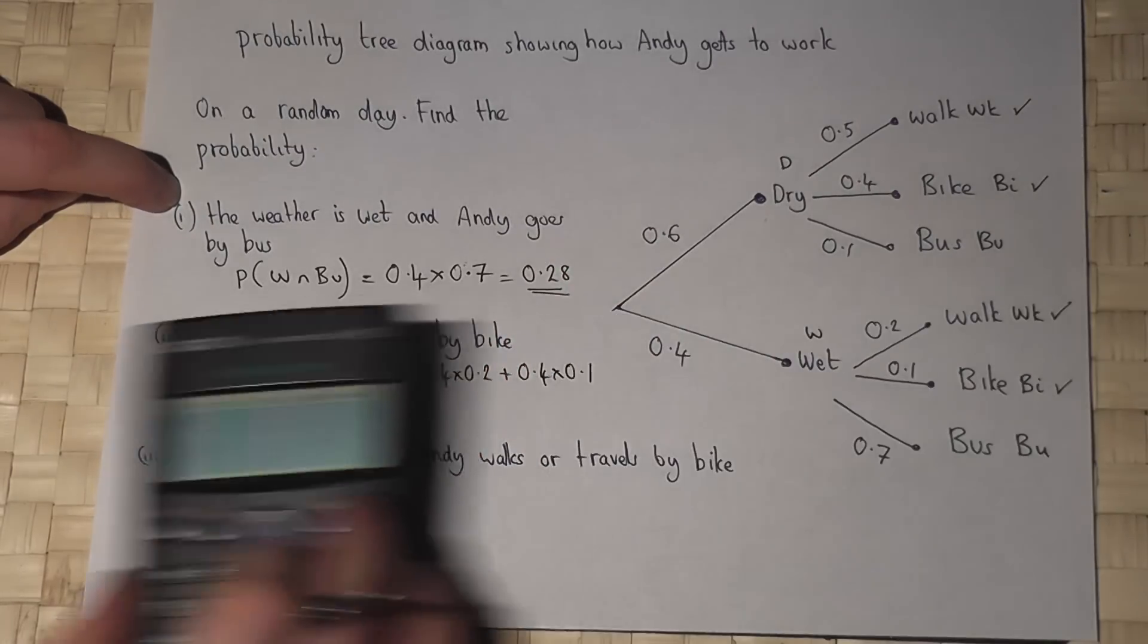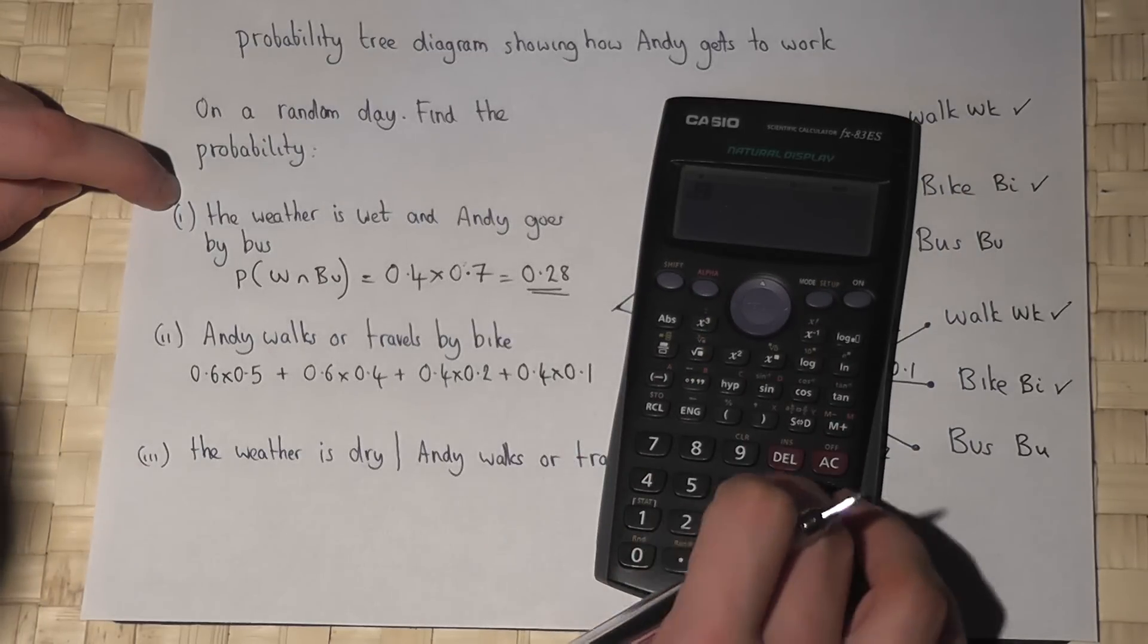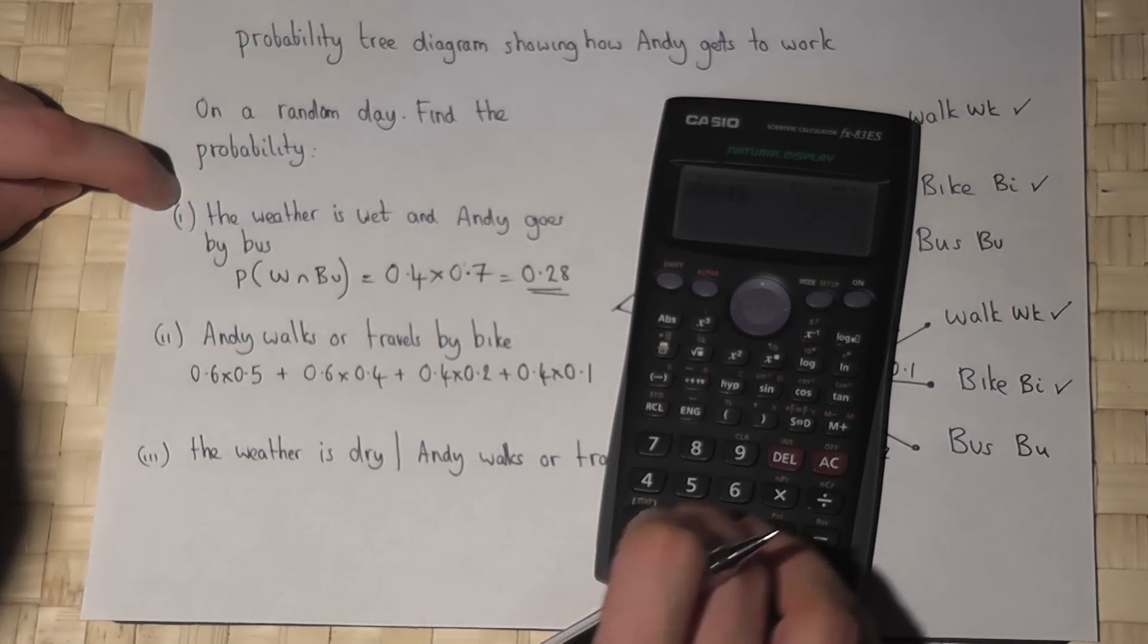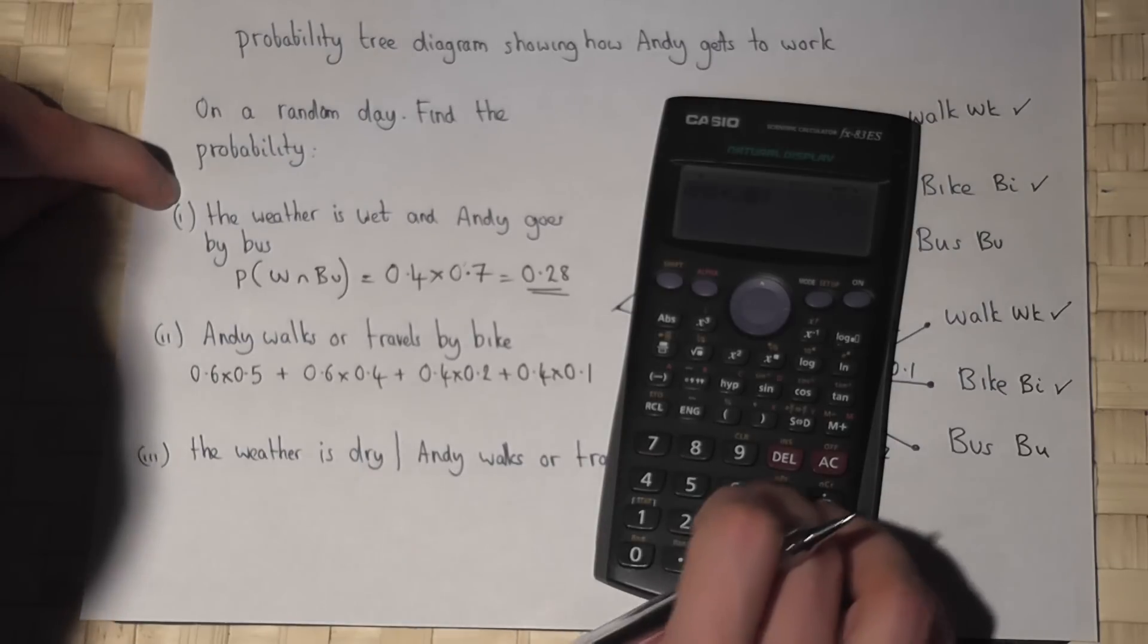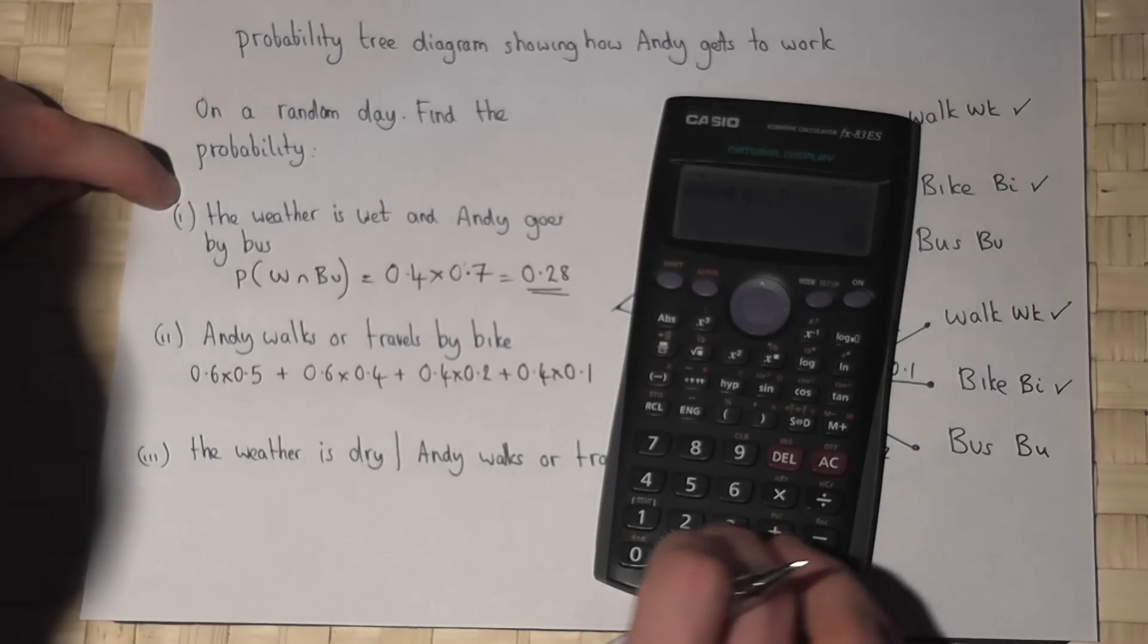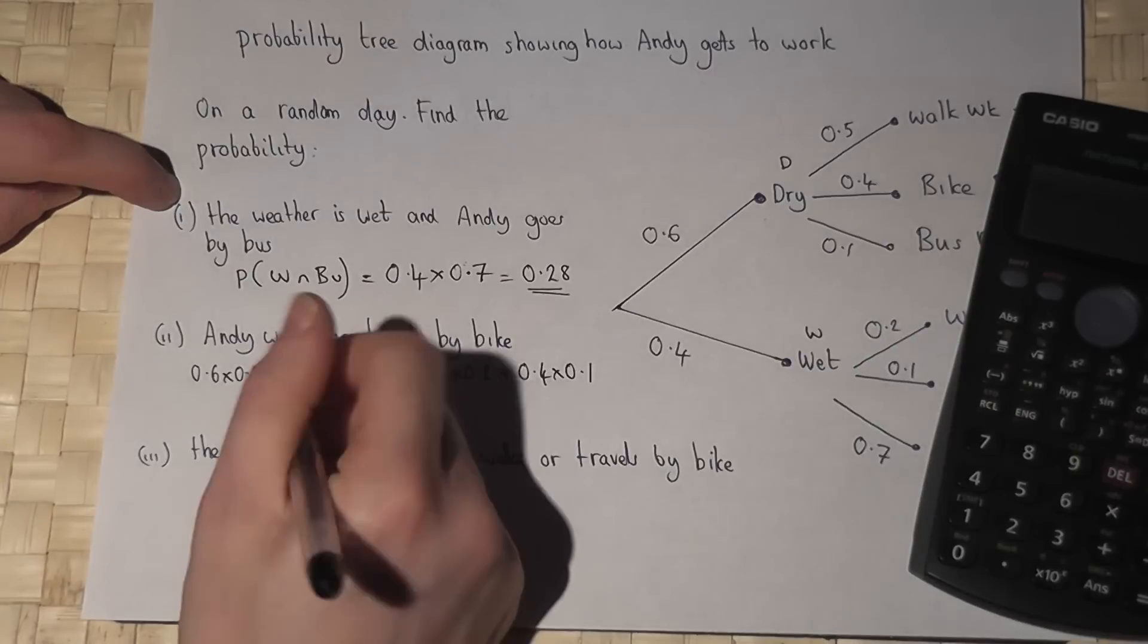Just to be on the safe side, we'll use a calculator. 0.6 times 0.5 plus 0.6 times 0.4 plus 0.4 times 0.2 plus 0.4 times 0.1 which gives an answer of 0.66.